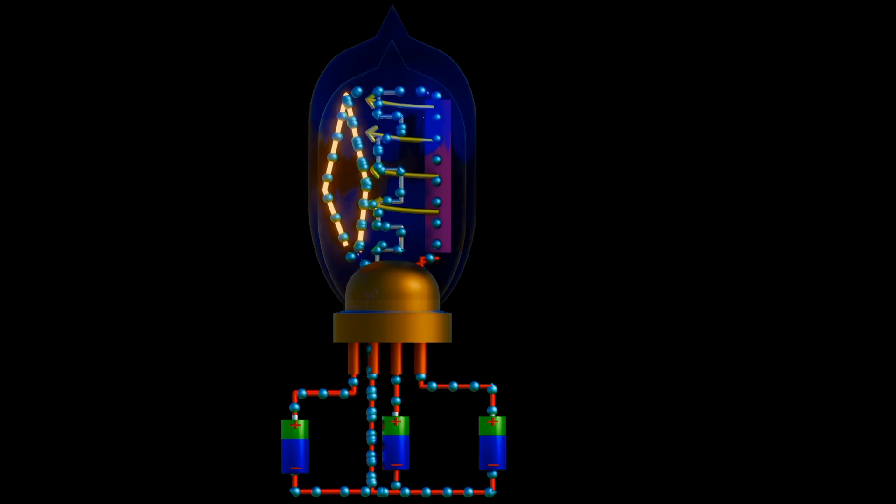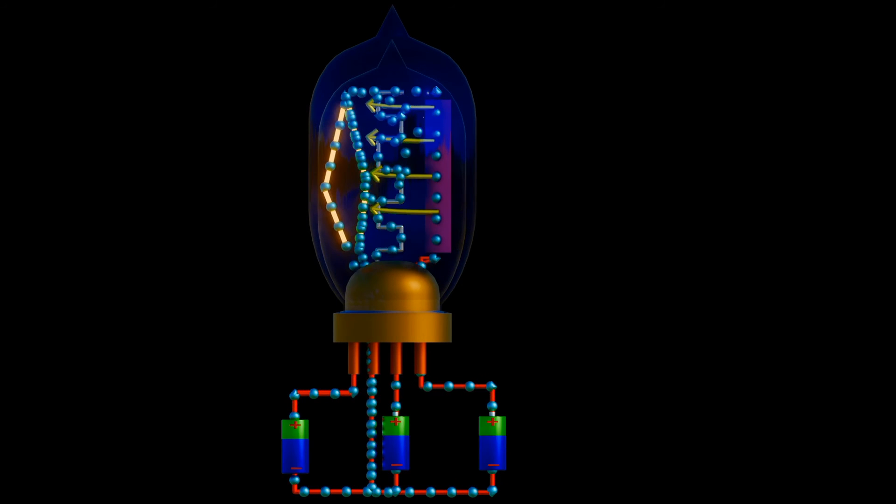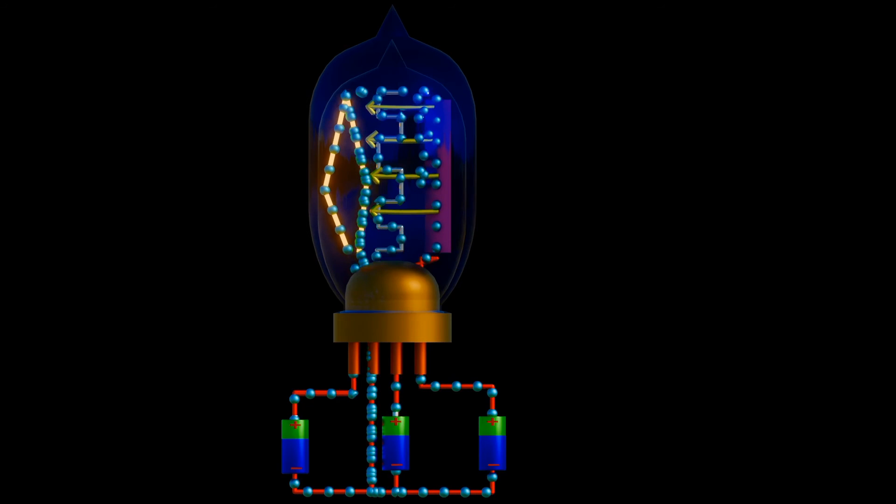When analyzing circuits, we take as a convection that positive current flows from higher potential to a lower potential.